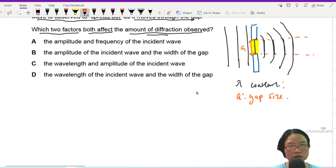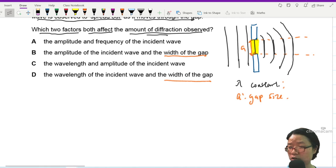So what would affect the amount of diffraction? Number one gap size or the width of the gap. So if I see width of the gap I'm happy to choose it. Number two it will be the wavelength, because when I say the gap size should be small, the good question will be how small is small? Well it should be around the order of the wavelength.